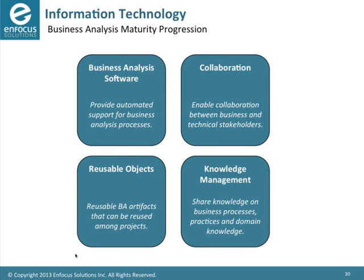For information technology: there are four things you need. First, business analysis software — it's time to move off Word and Excel into tools that provide real support for business analysis processes. Second, a tool that supports collaboration, since business analysis is all about collaborating with technical and business stakeholders. Third, a way to store and reuse objects — examples of good business cases, requirements, functional requirements checklists — things reusable between projects. Fourth, a knowledge management system to help colleagues collectively find the best way to solve problems.